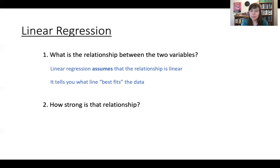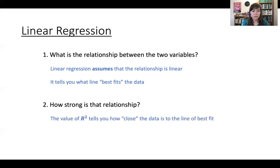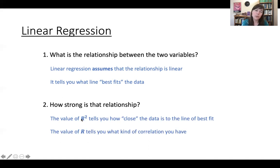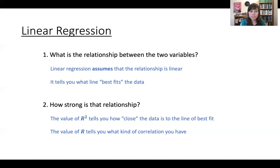We'll obviously do examples to make this clear, but this is just a high-level overview. We assume the relationship is linear, then we look at a line that best fits the data. Then we can ask, how strong is the relationship? And this is where the values of R squared and R come in. They tell you how close the data is to that line of best fit. R itself can be positive or negative, and that gives you extra information to tell you what kind of correlation you have — positive or negative. But let's go into more detail and look at an example.